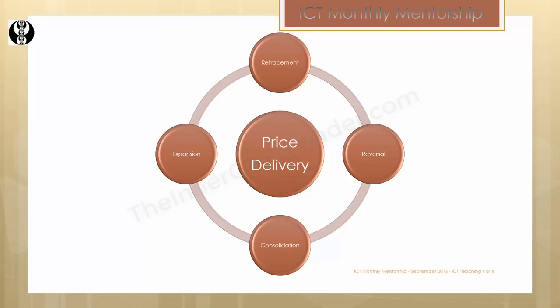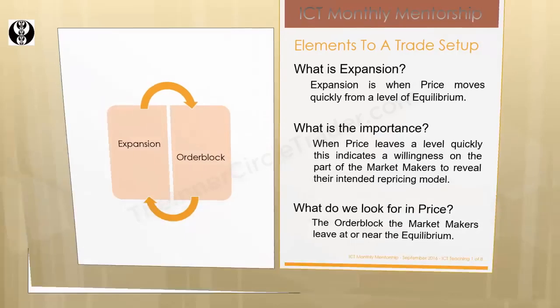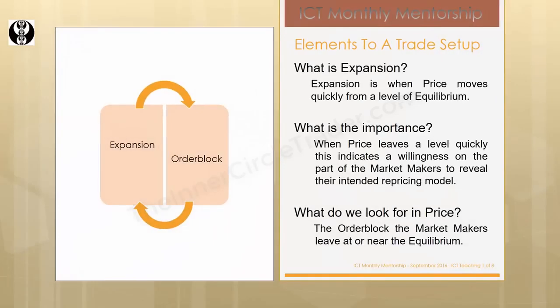What is expansion? Expansion is when price moves quickly from a level of equilibrium. Expansion couples directly with the tool of an order block. When price leaves a level quickly, this indicates a willingness on the part of the market makers to reveal their intended repricing model. If we're in a consolidation or point of equilibrium and price were to move up quickly, that gives us an indication of looking for a bullish order block. We don't want to chase price — we're going to wait for price to come back down into the order block.